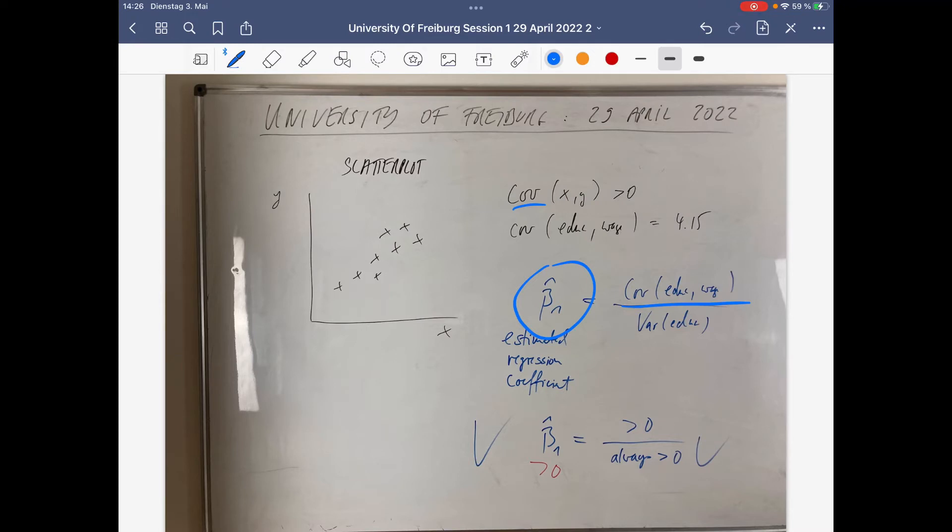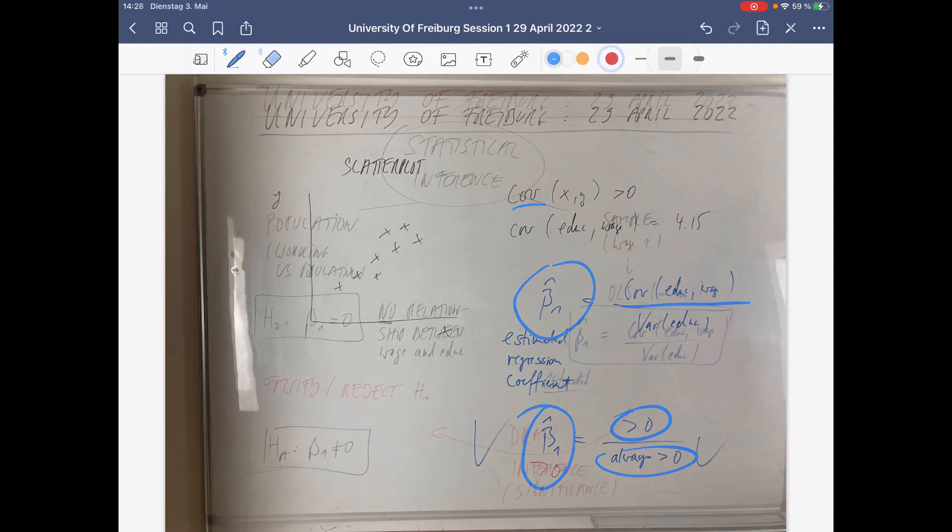So the variance, the sign of the covariance, not the size, but the sign of the covariance determines the sign of the estimated regression coefficient because the denominator is always positive. Once the numerator is positive, then the regression coefficient, the estimated regression coefficient, is also positive.